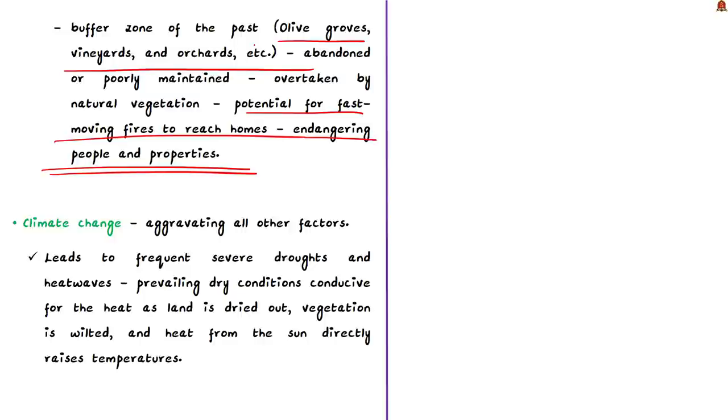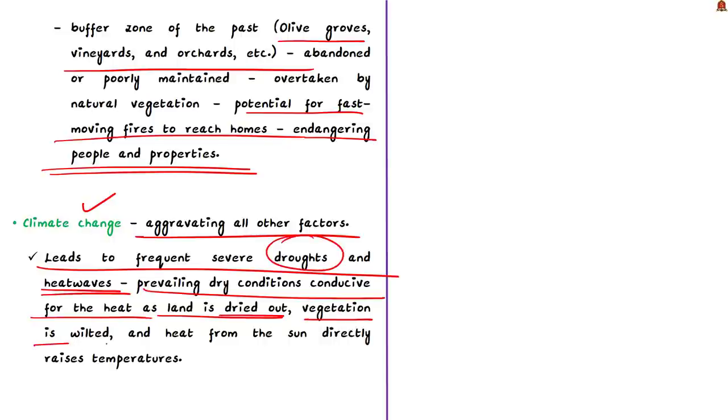Next comes the important reason which is climate change. It is aggravating all of the other factors. Increase in global temperature leads to frequent severe droughts and heat waves. These heat waves often form in association with drought. In these cases the prevailing dry conditions set the stage for heat because the land is already dried out and vegetation is wilted. All the heat from sun goes into rising temperatures which ultimately lead to catching of fires. In a normal condition, evaporative cooling mitigates the risk of catching fire because surface water or wetness acts as an evaporative cooler.